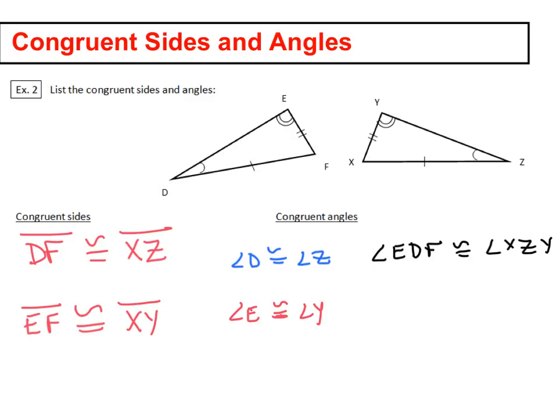Hopefully you guys are not as sloppy as I am. But let's come up with a better way to write it. So the better way would be angle, just put that vertex E in the middle. So you could say DEF is congruent to angle XYZ.